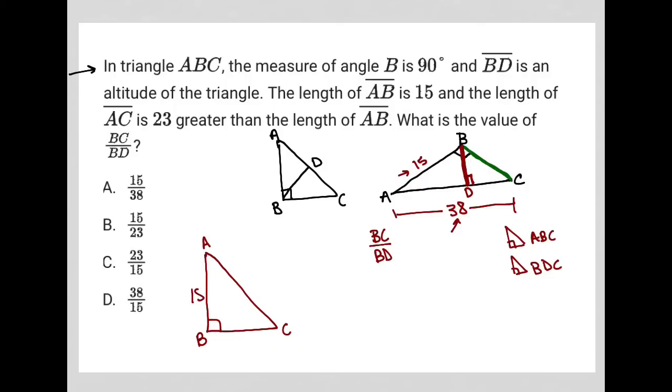I'm going to label with what I know. So I know AB is 15. And I don't know BC, but I know that I want to find that. So I'm going to just put an X there. And I know AC is 38. Now, if I were to draw a triangle BDC in the same exact orientation, it would look like this.